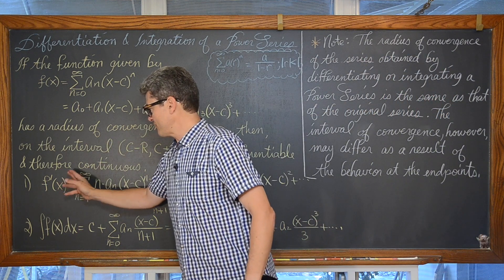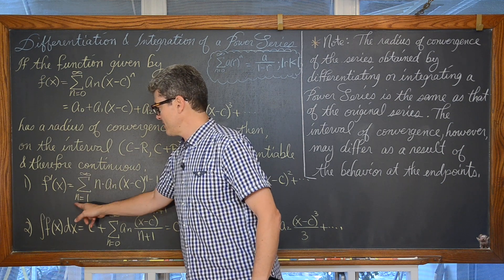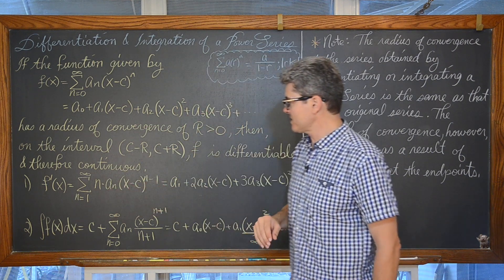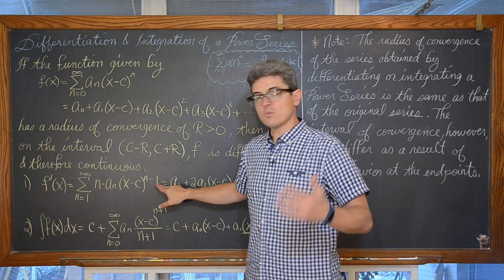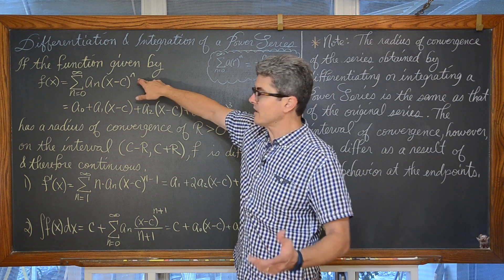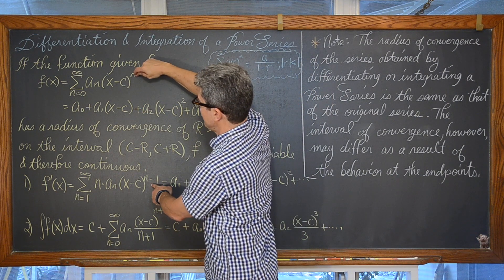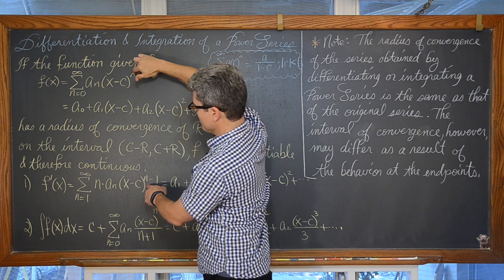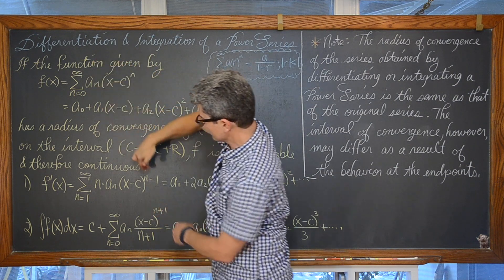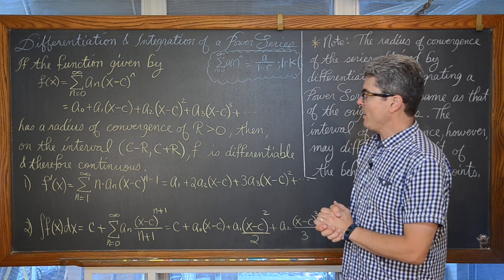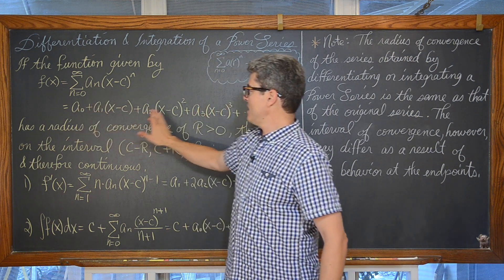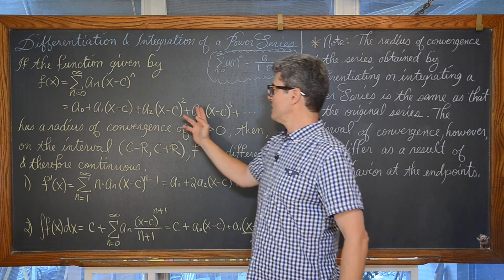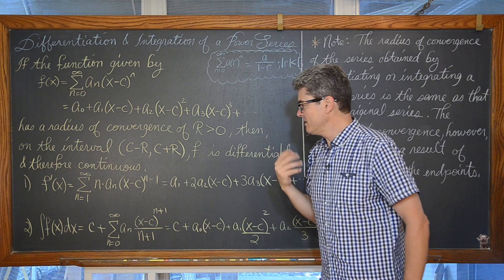Well if f is differentiable and therefore continuous, we have these guidelines. f prime of x, the derivative of f, is equal to the summation where n starts at one and goes to infinity of n times a sub n times x minus c to the n minus one power. You can see if you look back at our original given series, we have a variable base and a fixed power — well that is going to go to infinity — but we have this power of n coming down and we are just reducing the power by one. We are taking the derivative using the power rule. This a sub n is just some kind of constant in front of each term of our polynomial, which effectively goes on forever.